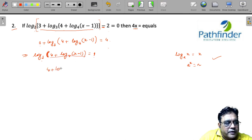So 4 plus log base 4 of (x - 1) equals 3. Again, taking 4 on the other side, we have log base 4 of (x - 1) equals minus 1, which means 4 to the power minus 1.